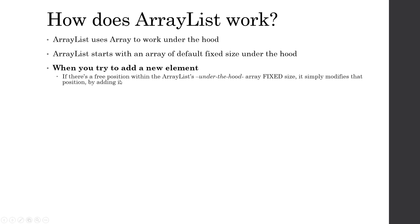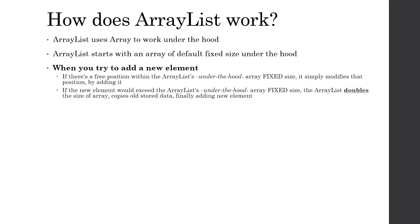If there is no extra space and the array is full, the ArrayList doubles the size of the array, copies all the previously stored data into the new array, and finally adds the new element. That's how adding works in detail.